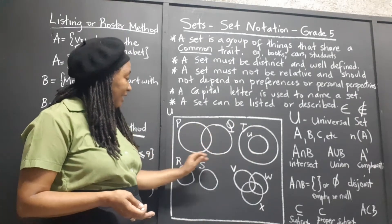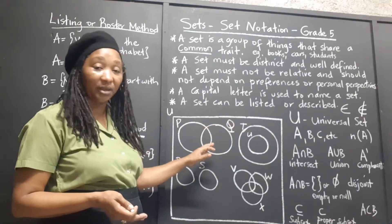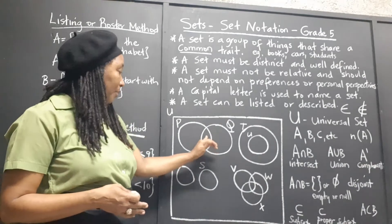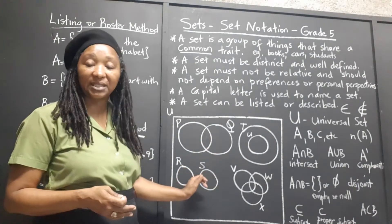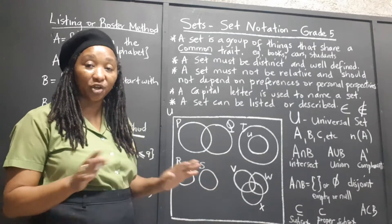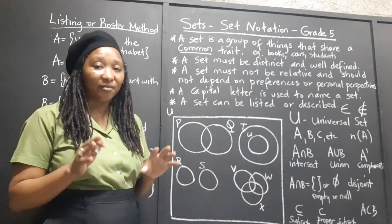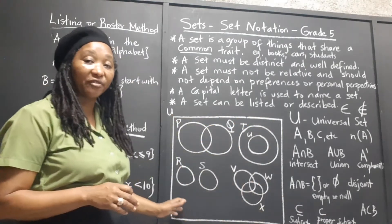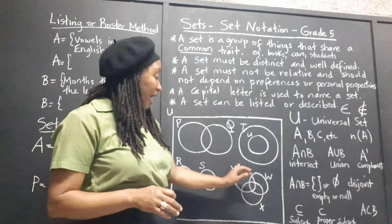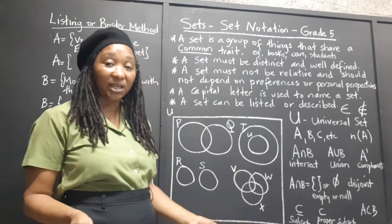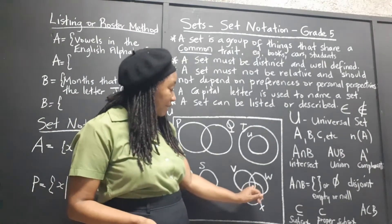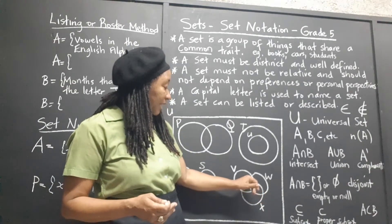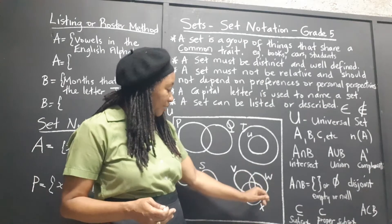Here we have two sets intersecting — they overlap each other, which means the elements here are in both of the sets. Here we have two sets that are not intersecting; we say that these sets are disjoint. These two particular sets have no special traits in common, but they are both part of the universal set. Here we have three sets overlapping, and we could even have more sets overlapping. Those in the middle would be elements that are common to all three sets, and these would be common to just two of them.